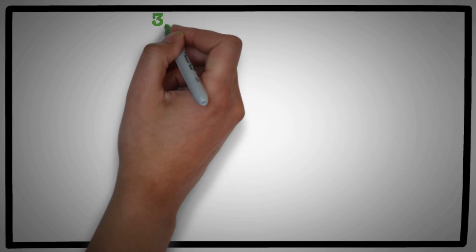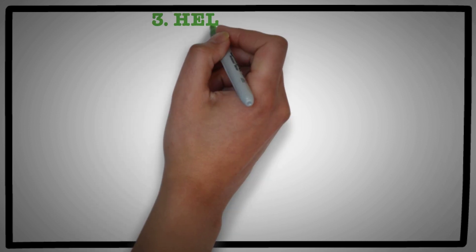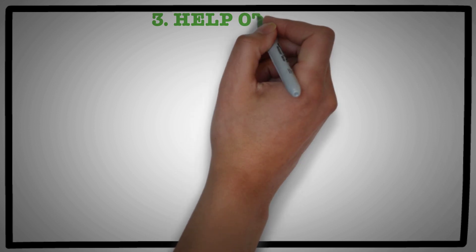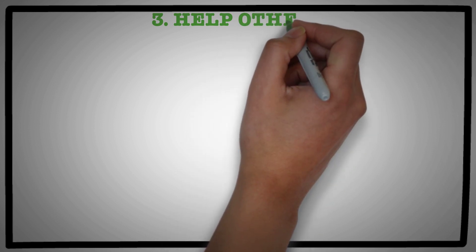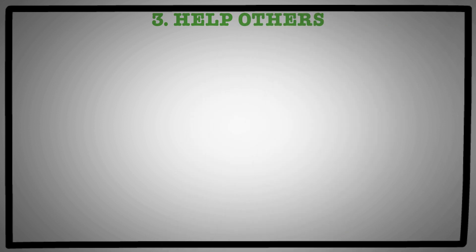The third key strategy, it's rather counterintuitive. What it says is that when you are stressed out, when you are worried, you need to stop worrying about yourself and go help someone else out instead.